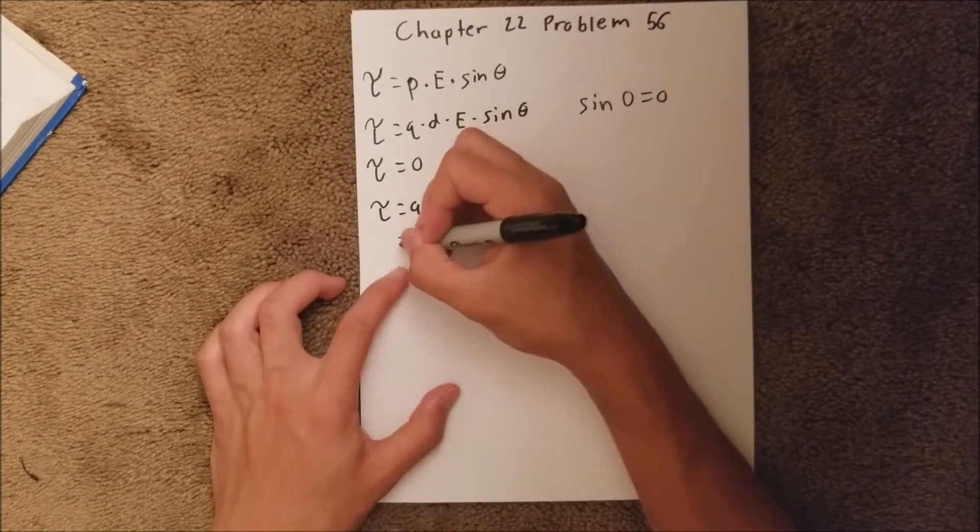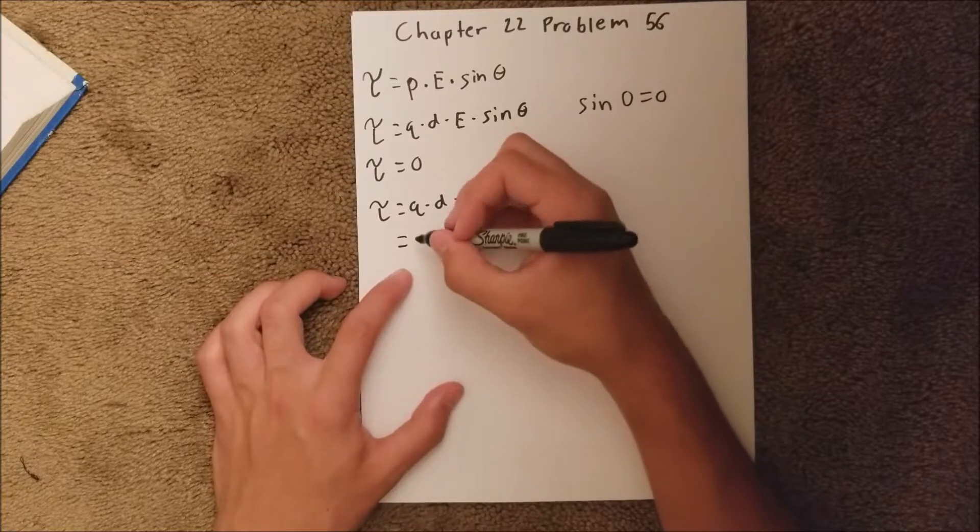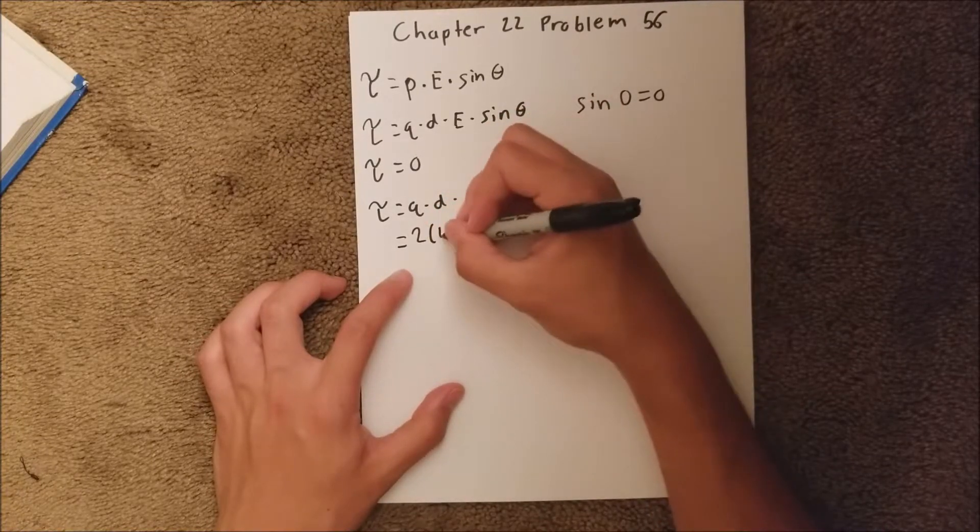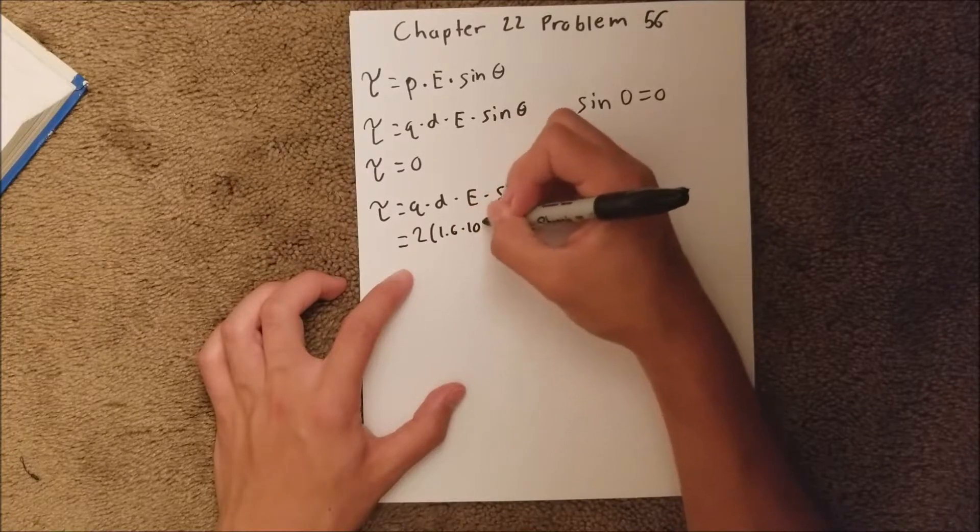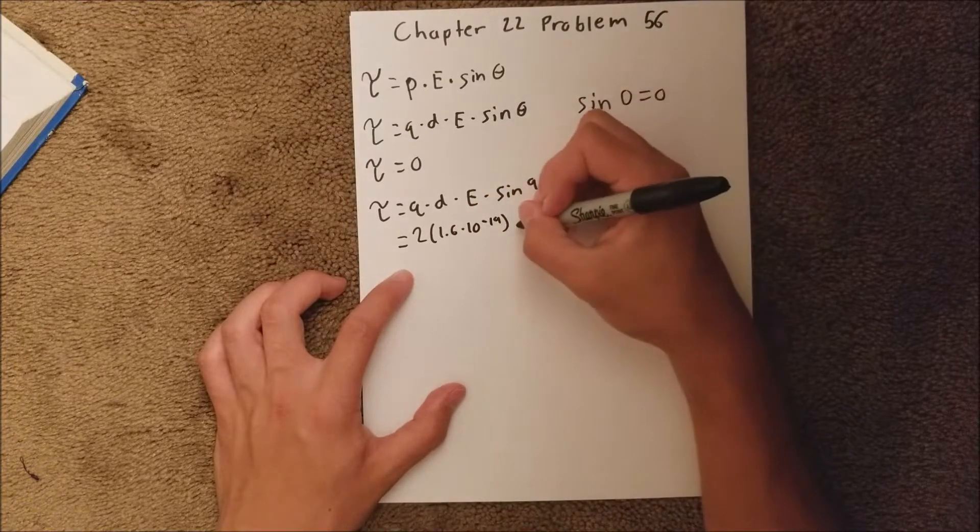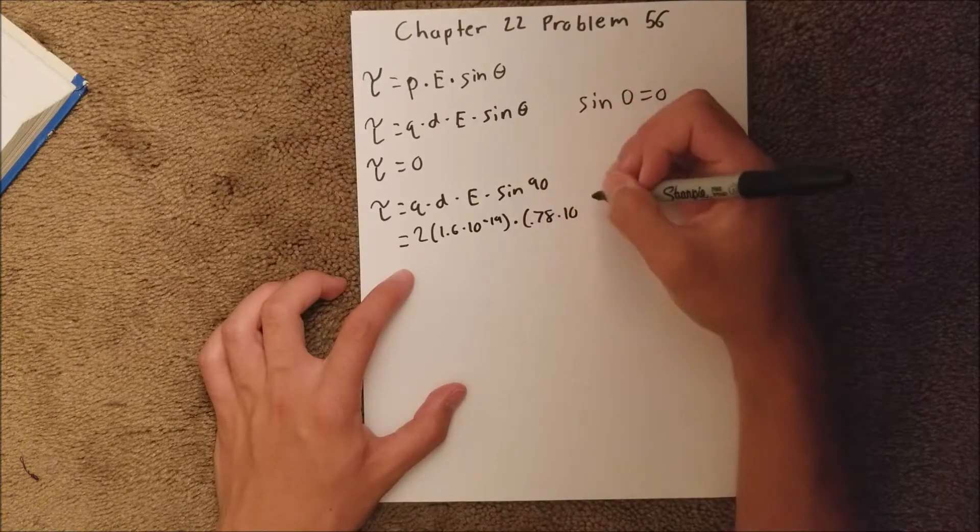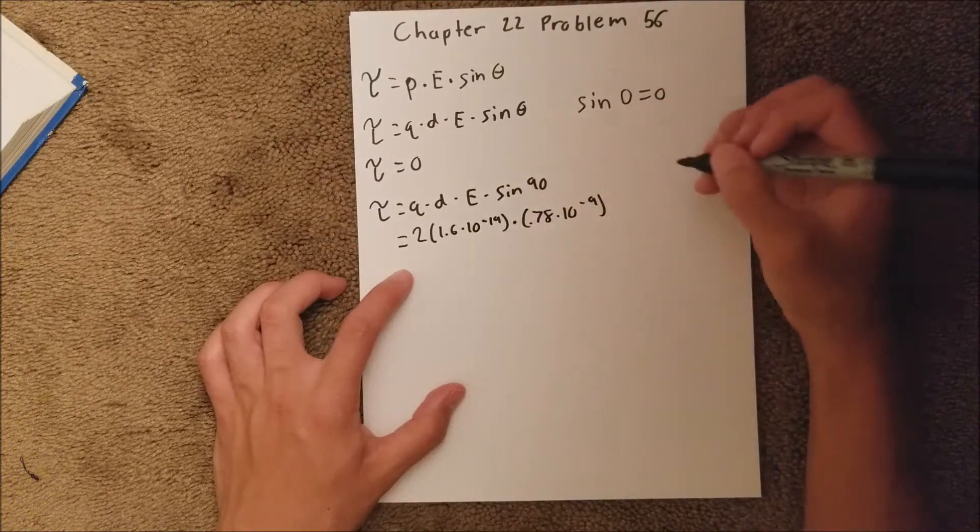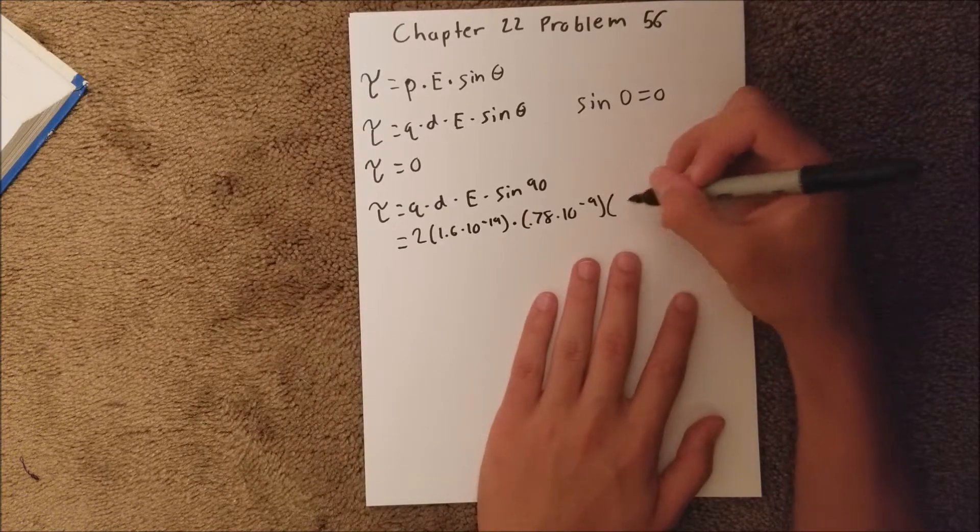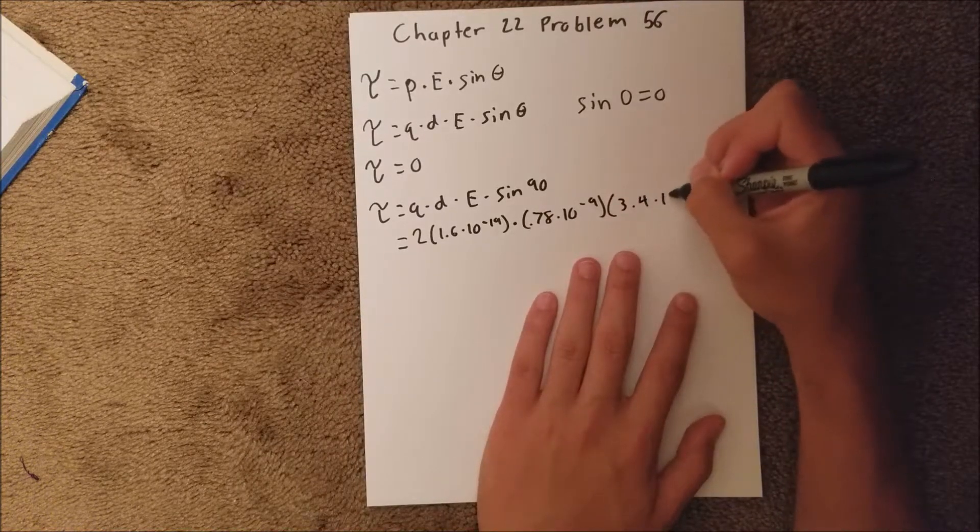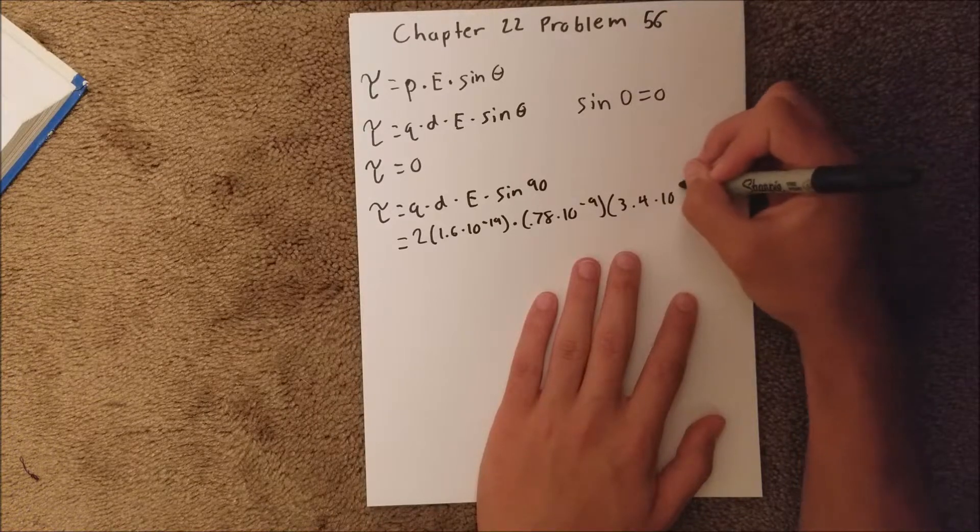Our q is 2e, so 2 times 1.6 times 10 to the negative 19, times our distance, which is 0.78 times 10 to the negative 9, times our electric field, which is 3.4 times 10 to the 6.